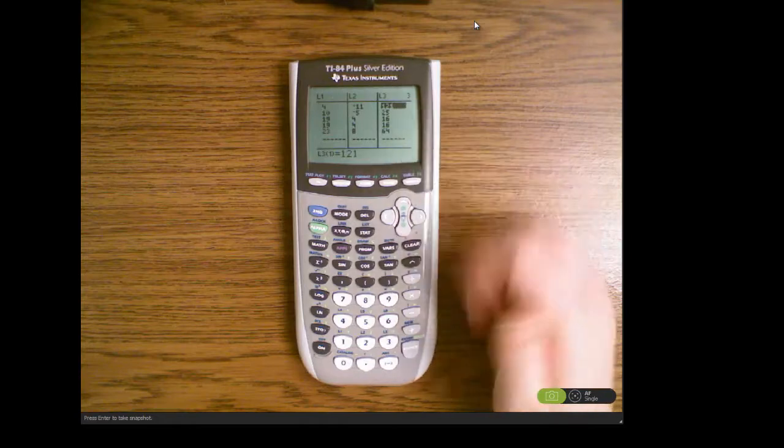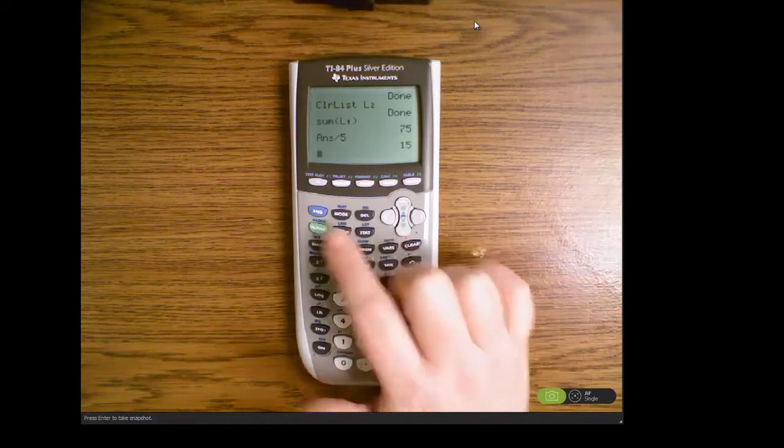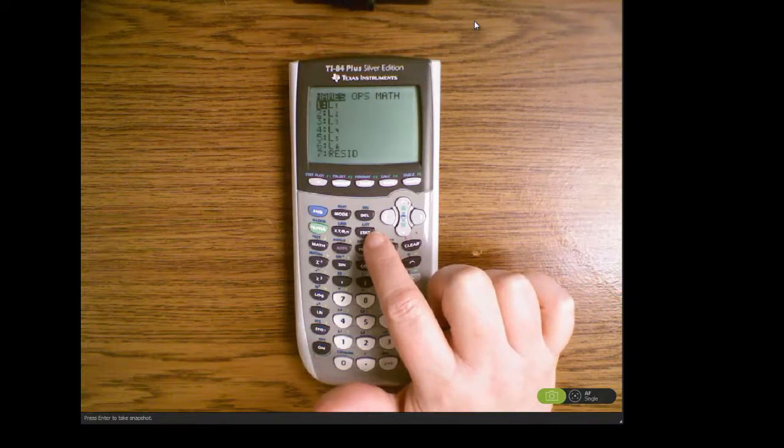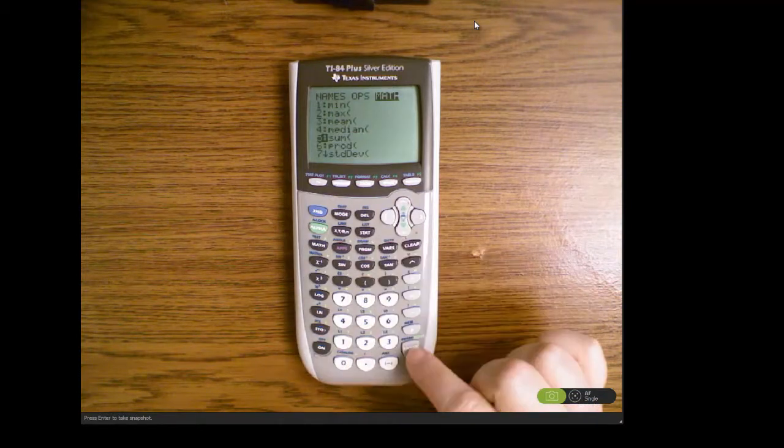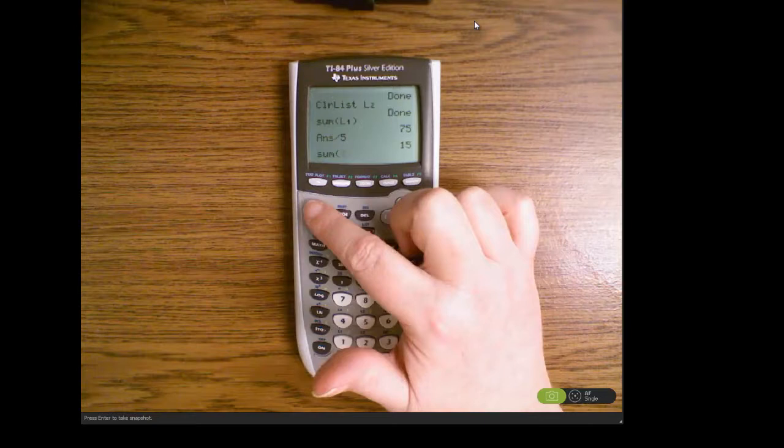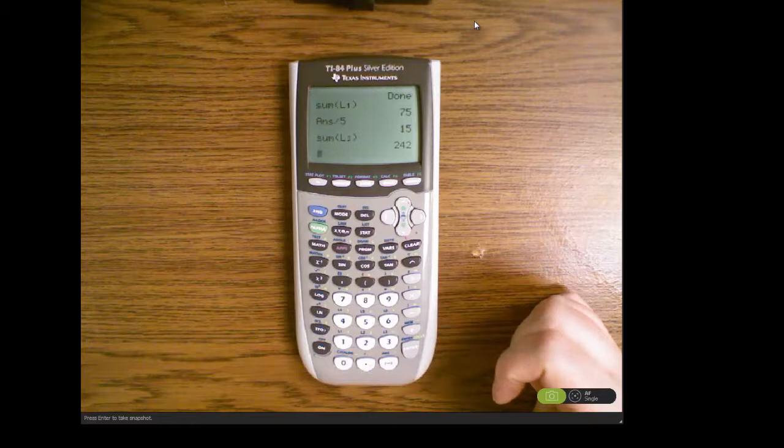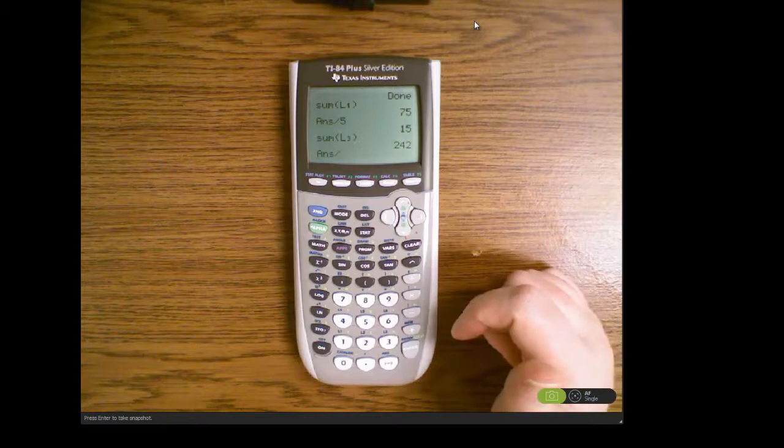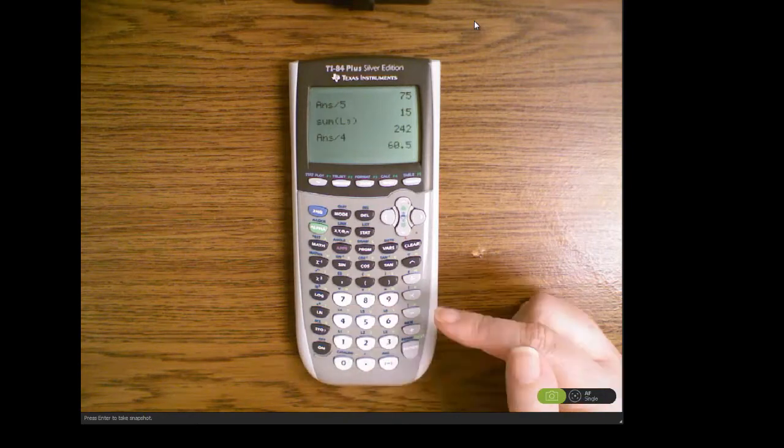Now we need to take the sum of list three so we're going to go second quit, get out of that menu, go back to the list menu by hitting the second and then the STAT button, over to math, down to sum again. We're hitting list three. To find the variance we take this sum and divide by n minus one, so this time we won't divide by five but by one less than that which would be four, and that gives us sixty point five which is the sample variance.